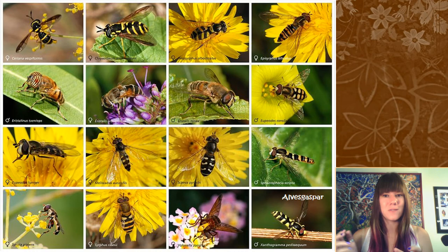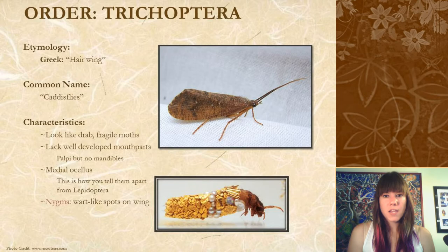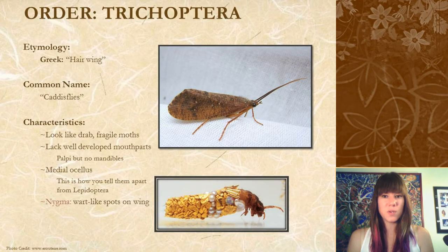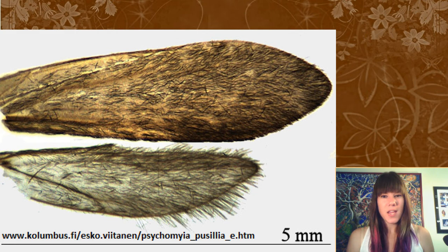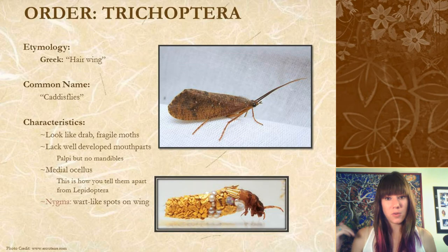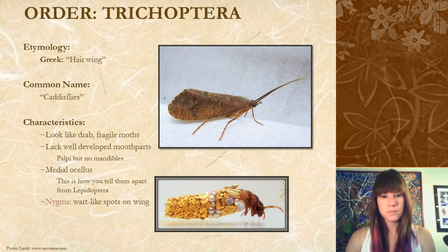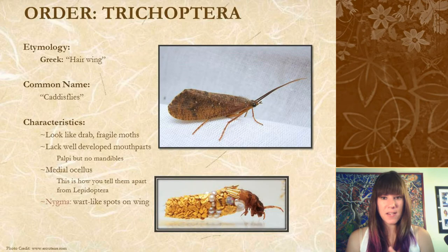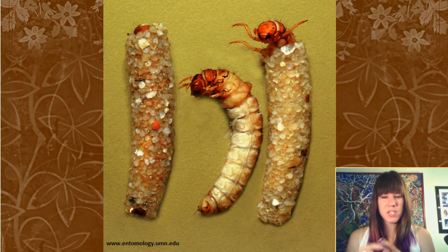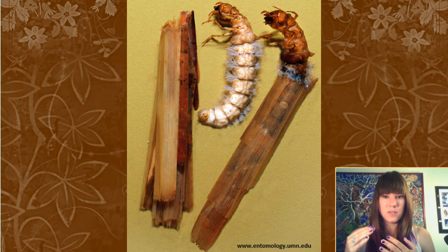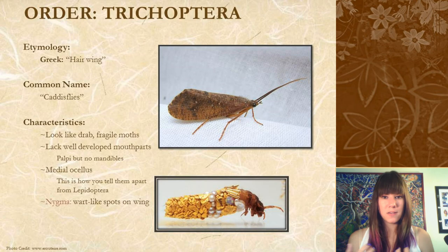The next order is Trichoptera — your caddisflies. In Greek this means 'hair wing' because under a microscope their wings have little hairs on them. They kind of look like fragile moths but have really long filiform antennae and a medial ocellus, so if you're confused about whether you have a moth or a caddisfly, check for those. Trichoptera have an aquatic larval stage, and the larvae build cases out of whatever's around — rocks, pebbles, sticks, and leaves. The materials used and the shape of the casing are pretty specific to species or genus, so you can tell them apart by casing materials and shape.